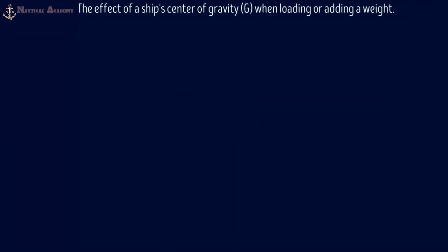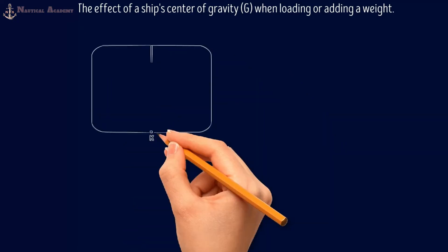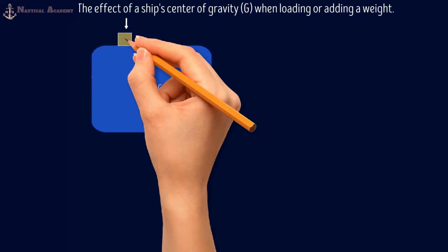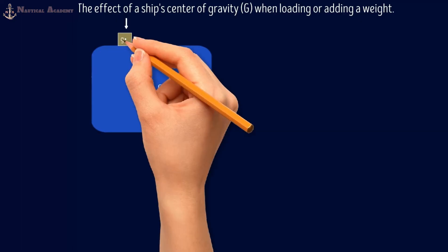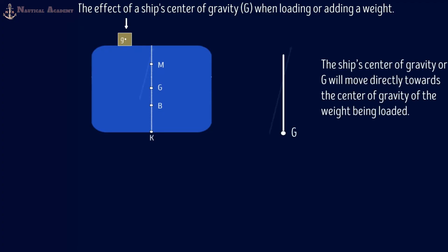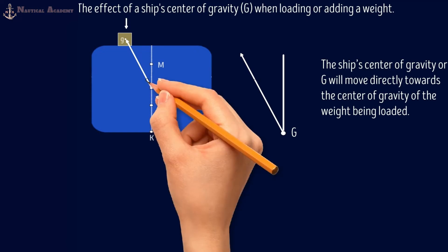For the effect on the ship's center of gravity when loading or adding a weight: if this is the ship's transverse section and the ship's center of gravity is here along the centerline — if a weight is loaded on the main deck with its center of gravity marked as small g — the ship's center of gravity G will move directly towards the center of gravity of the weight being loaded. The new ship's center of gravity will be marked as G1.